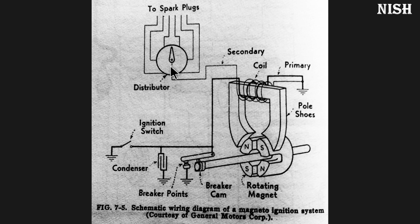The distributor works according to the firing order — it distributes the spark to each cylinder. A common firing order is 1-3-4-2. The distributor distributes the spark to the correct spark plug at the correct time for each cylinder.